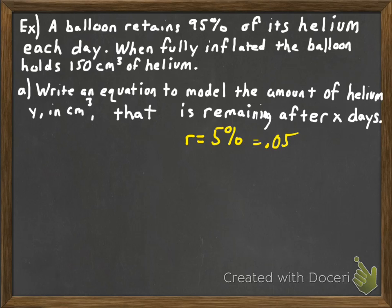To write the equation that models the amount of helium that's remaining after x days, we just have to go ahead and apply that to our formula. We'll say that A is equal to the original amount of helium, 150 cubic centimeters, times 1 minus 0.05. By coincidence I picked that exact amount in the previous example, so you already know 1 minus 0.05 is 0.95 to the x power.